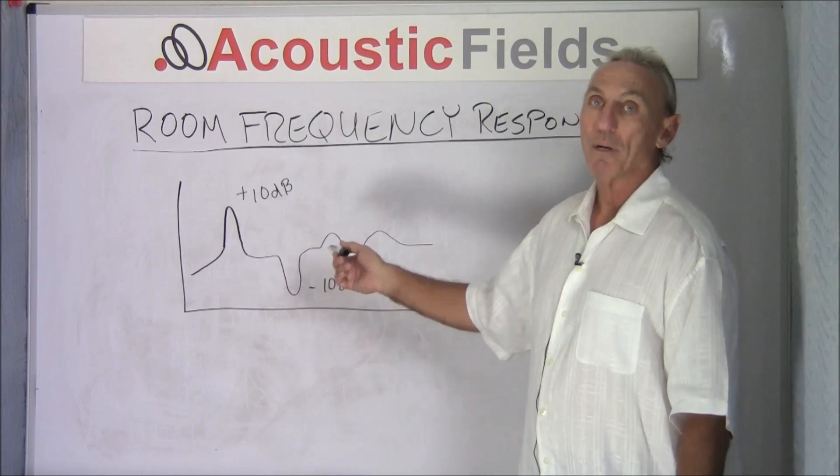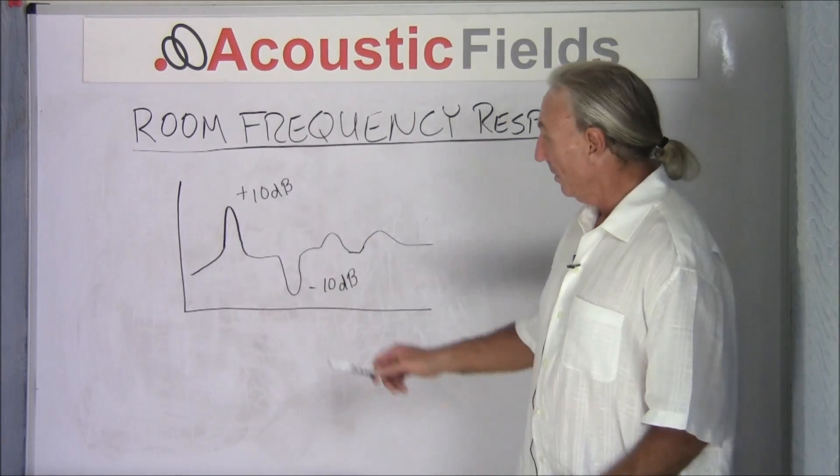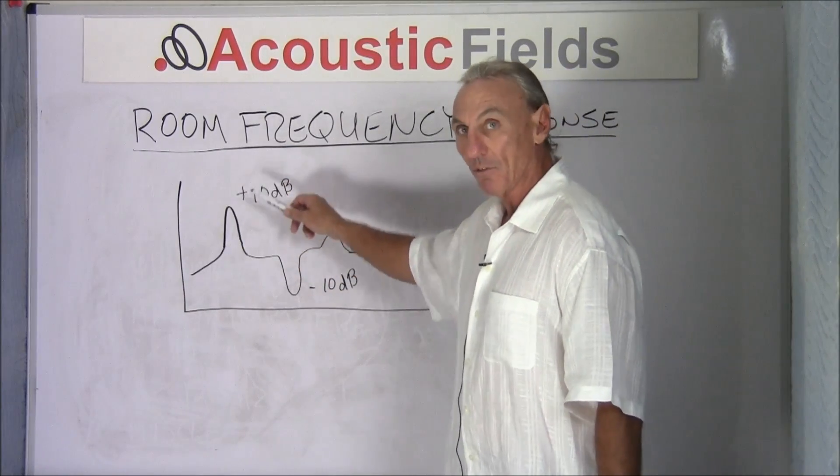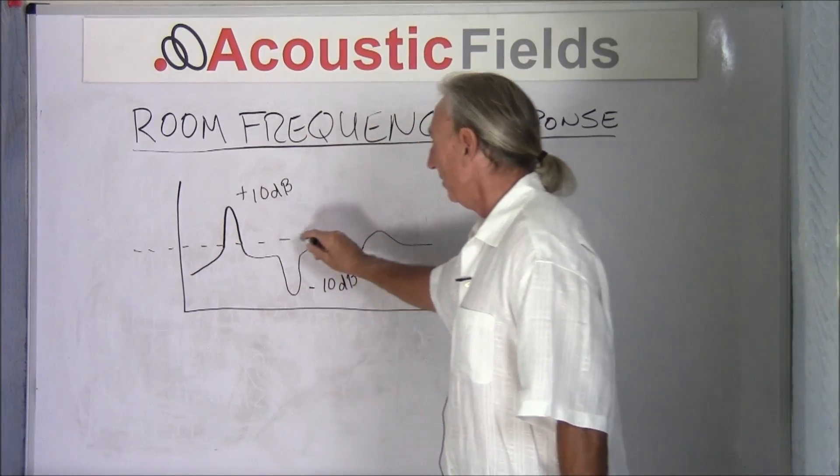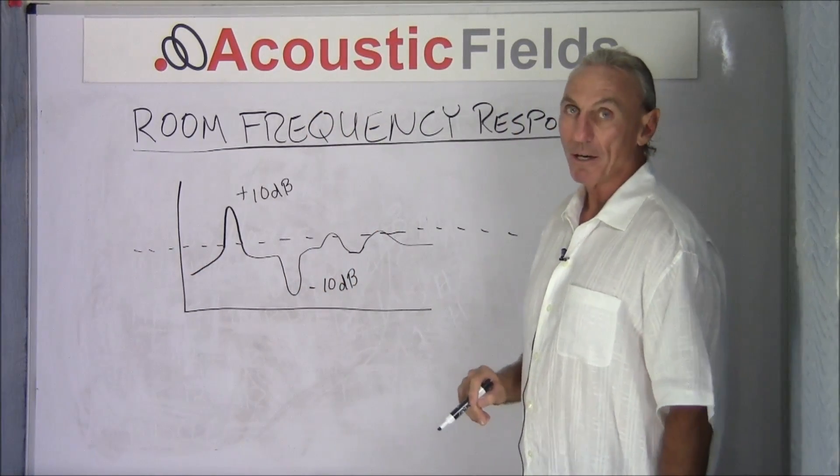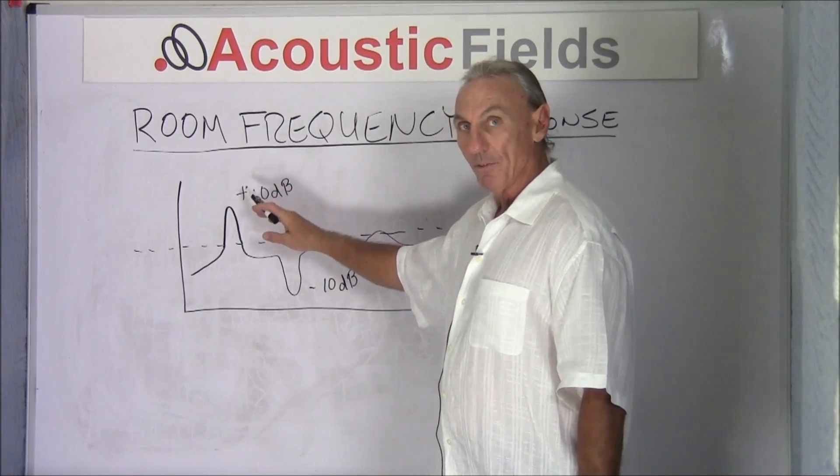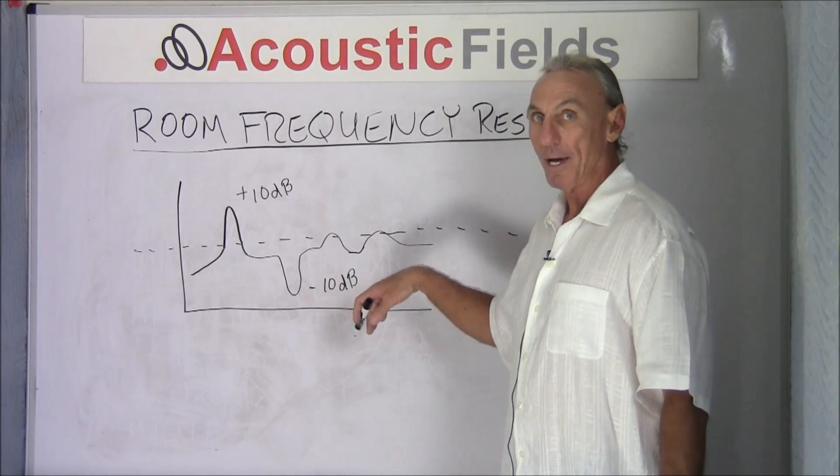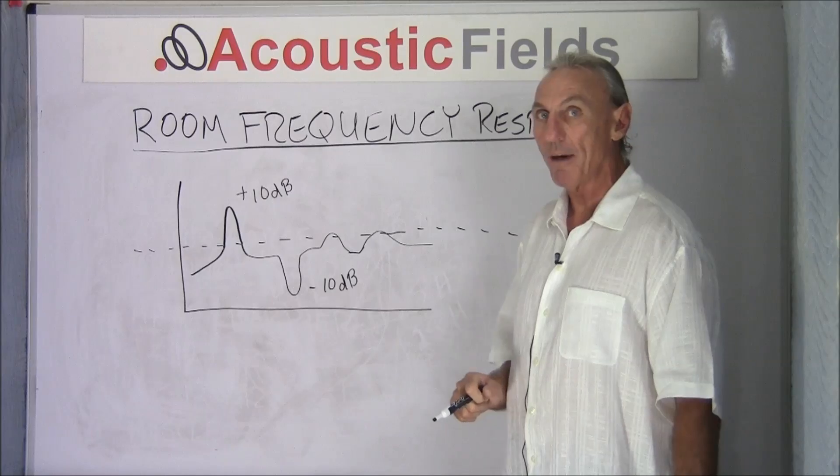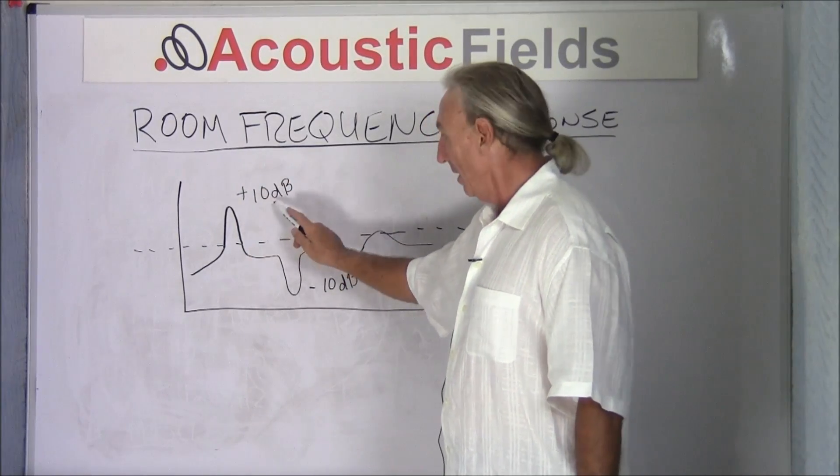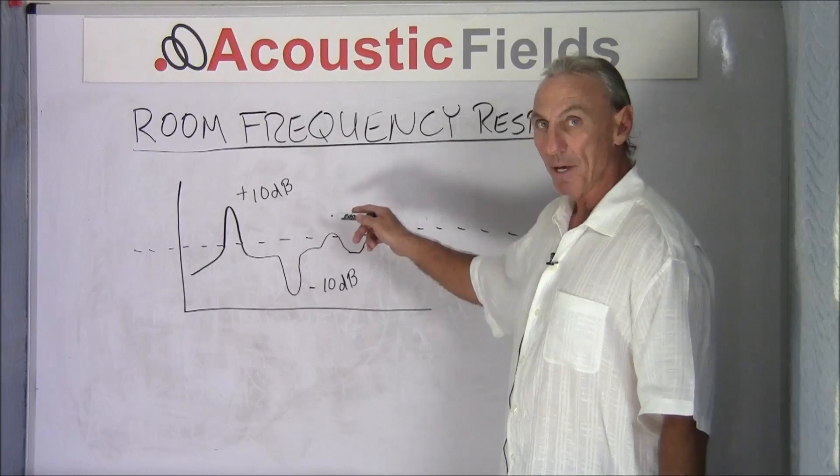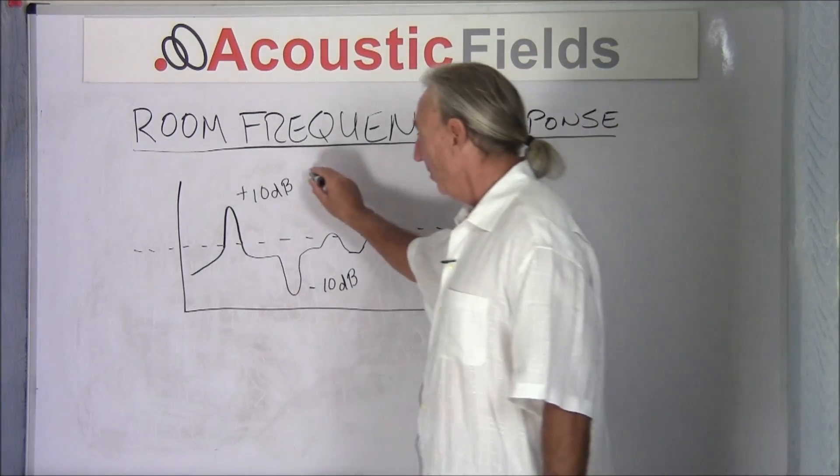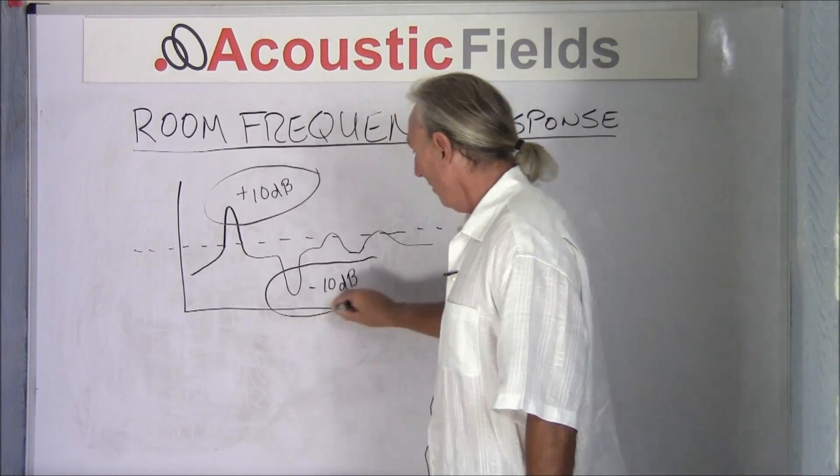A common graph that I see in rooms that are measured are peaks and troughs. So we have high points and low points. If we take this as our baseline and our center measurement, we have energy signatures above the line and we have energy signatures below the line. Now what do those two energy signatures have in common? What does a peak of plus ten dB and a dip of minus ten dB have in common?